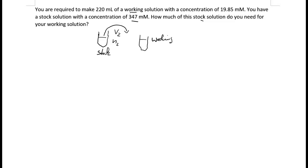We place that into our vessel — that is our working solution, and that is the solution that we want. The stock is one solution and the working solution is the other. The working solution should have a certain volume, let's call this volume 1, and a certain concentration, let's call this concentration 1. That is what we want — we are trying to figure out how much of the stock volume we need to transfer into our working solution so that we end up with the correct volume and the correct concentration.